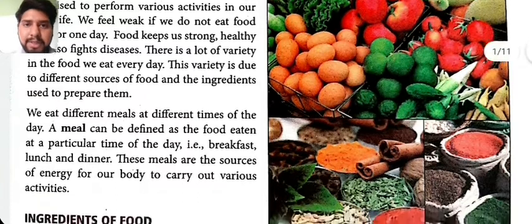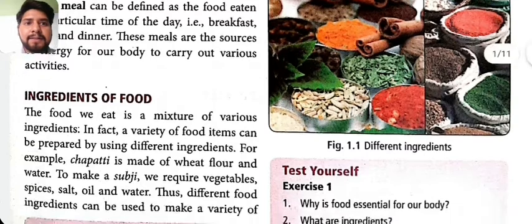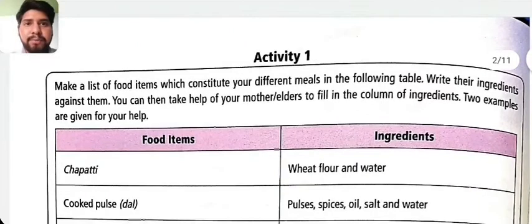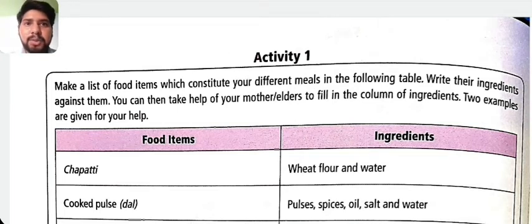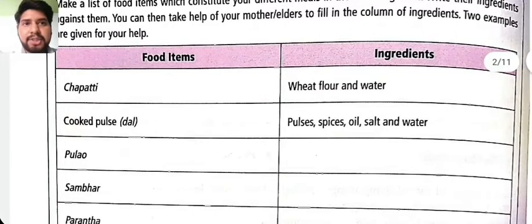What are the ingredients of food? The food we eat is a mixture of various ingredients. For example, chapati is made up of wheat flour and water. Ingredients are the components used to prepare food. Do an activity at home: make a list of food items which constitute your different meals and write their ingredients against them.